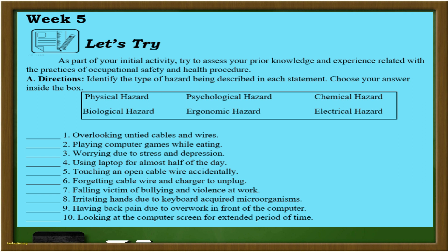Direction: Identify the type of hazard being described in each statement. Choose your answer inside the box: physical hazard, psychological hazard, chemical hazard, biological hazard, ergonomic hazard, and electrical hazard.